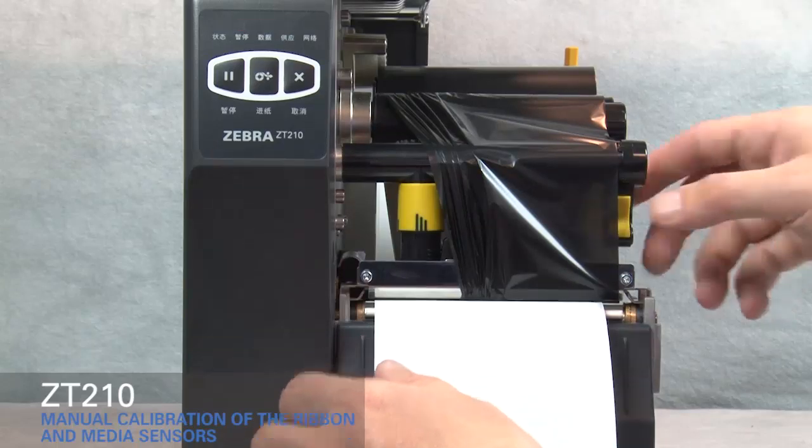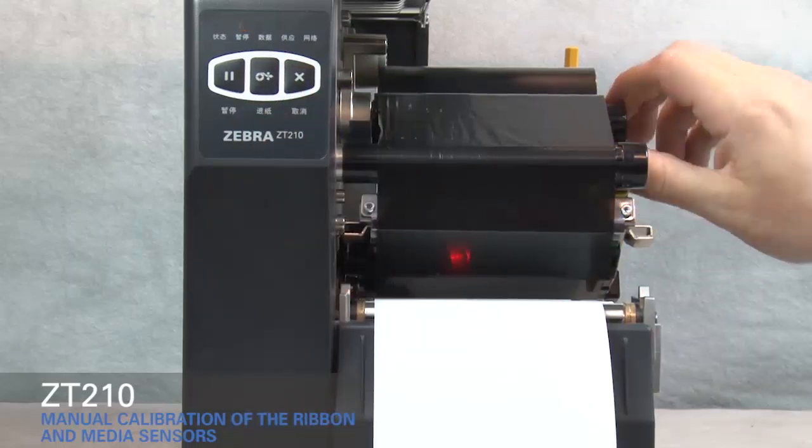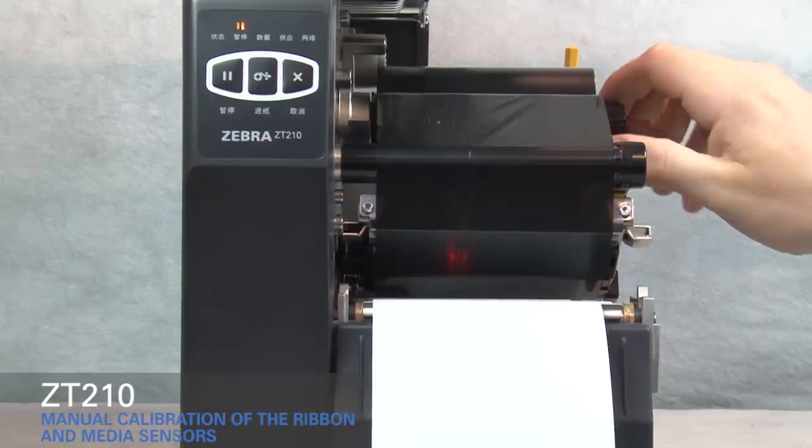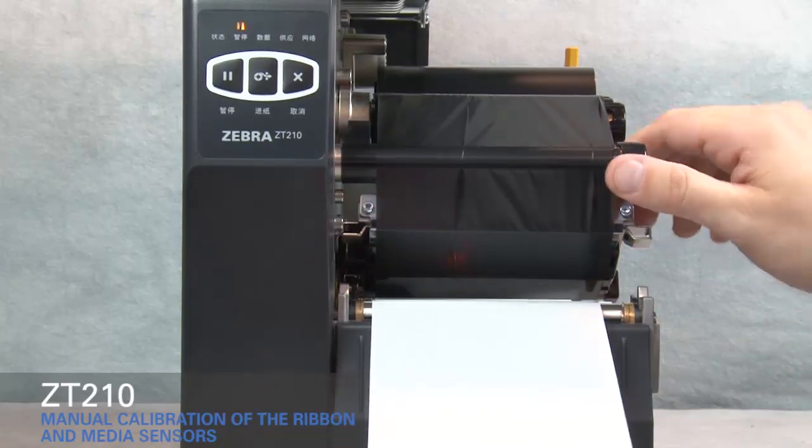Open the printhead. Straighten the ribbon. Turn the ribbon spindle to the right to remove ribbon slack. Pull the media forward until a label is positioned under the media sensors.